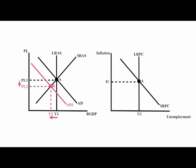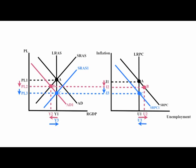When we go through contractionary policies, we will decrease the aggregate demand curve to the left. We move to point B — price levels and real GDP will decrease, bringing inflation down and our unemployment up. In the long run, the supply curve will shift back to equilibrium, which will be a rightward shift to point C, further bringing down price levels and bringing our GDP back to our original starting point, which will result in a leftward shift in the short-run Phillips curve, further bringing inflation down and our unemployment back to our equilibrium starting point.